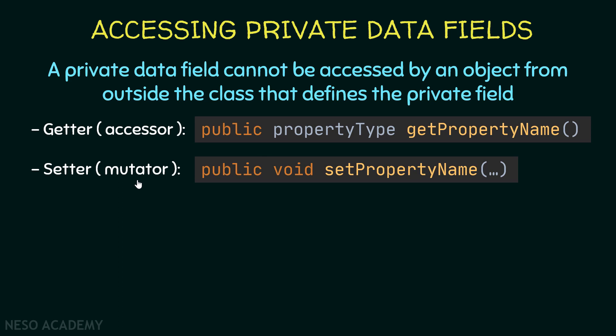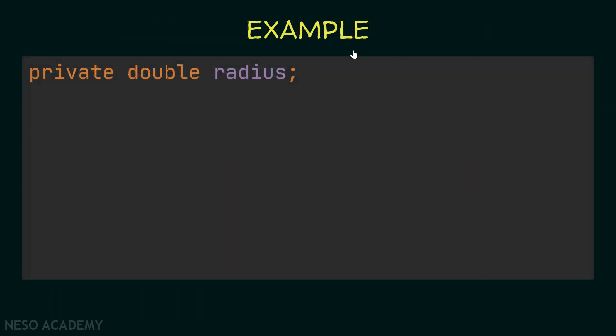The setter is also called a mutator and it helps us change the value of an attribute. It is a public method that returns nothing, and it is named 'set' followed by the name of the attribute. We pass the new value as a parameter, and inside this method we assign the attribute to be equal to that parameter.